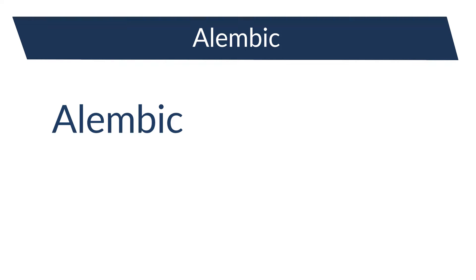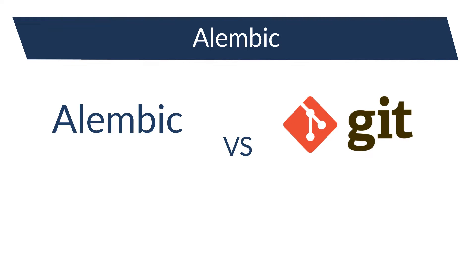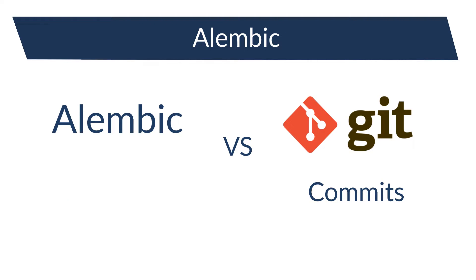Here comes Alembic. Alembic is like Git — Git is for the codebase, Alembic is for the database schema. Each modification on the code is associated to a commit in Git. Each modification on the database schema is associated to a revision in Alembic.